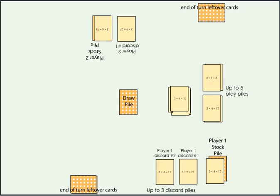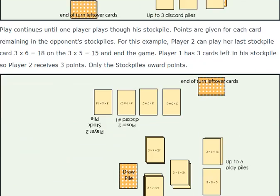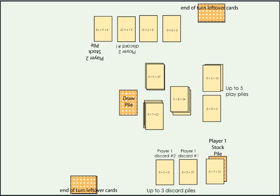Play continues until one player plays all the way through his stockpile. Points are given for each card remaining in the opponent's stockpiles. For this example, player two can play her last stockpile card, three times six equals 18, on the three times five equals 15. And in this game, player one has three cards left in his stockpile. So player two receives three points.